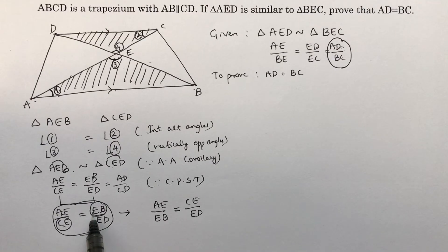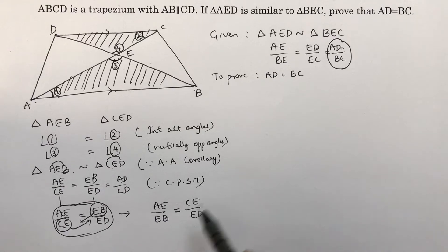So this I will bring here and this value I will take to this. You can do cross multiply, then you can interchange. So AE by EB is CE by ED.